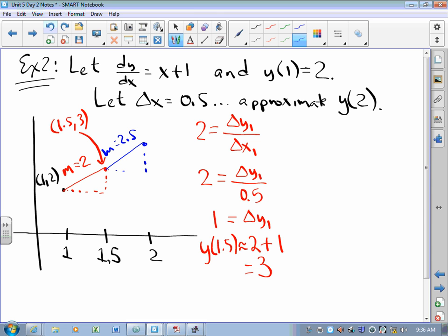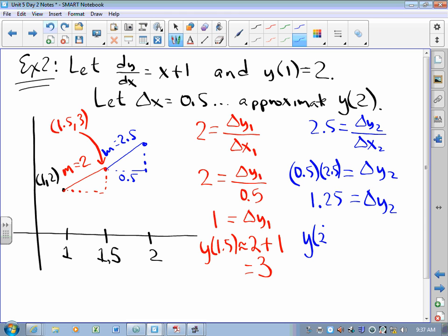And I'm going to ask the same questions I asked before. How did that slope come to be? Well, that slope is the second change in y over the second change in x. But I know what that second change in x is. That's 0.5. And so the second change in y is 1.25. So at 2, what's my approximate y value? My approximate y value is the previous y value plus the change in y. That's 4.25.